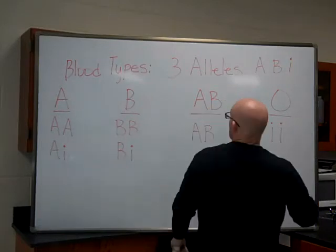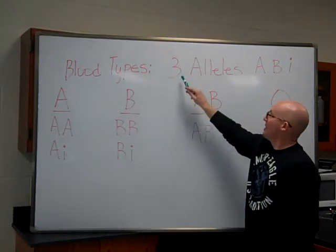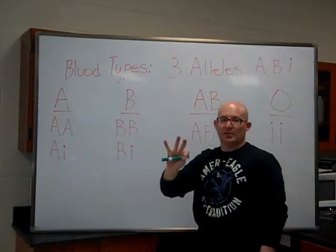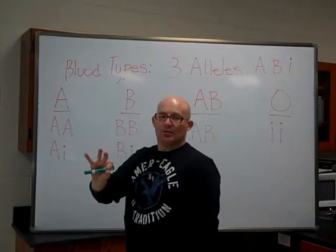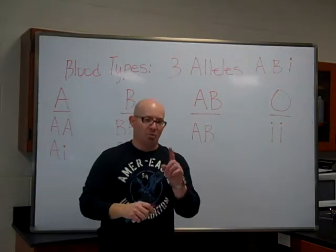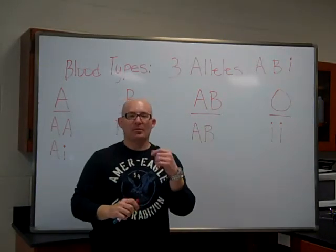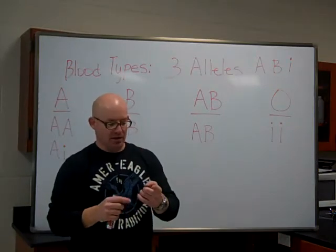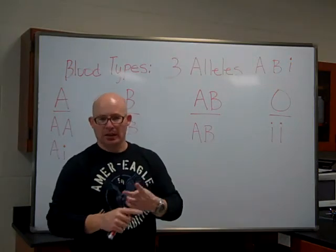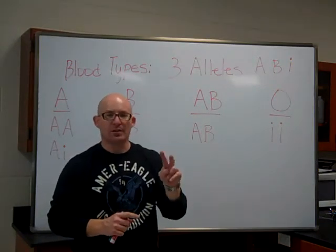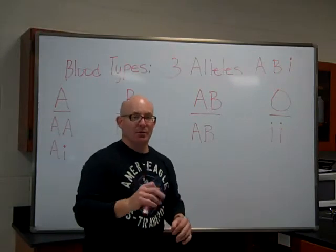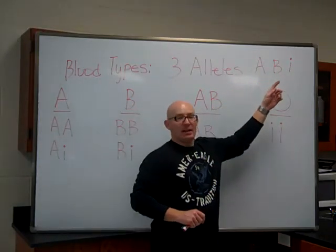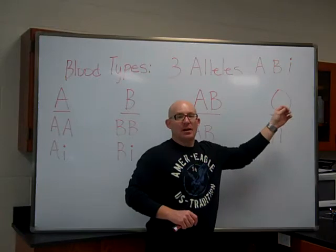Blood types actually have three alleles — three alleles. With normal genetics and simple inheritance, we talked about big A and little A — you had two alleles. In this case, we have three alleles: A, B, and little i. Little i is basically the O allele.